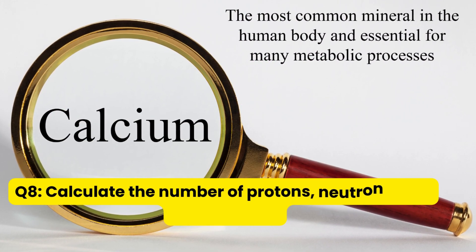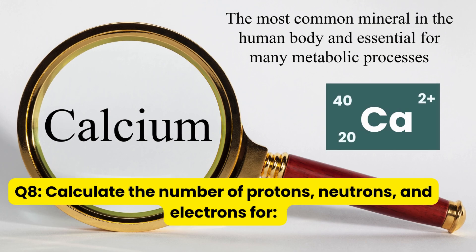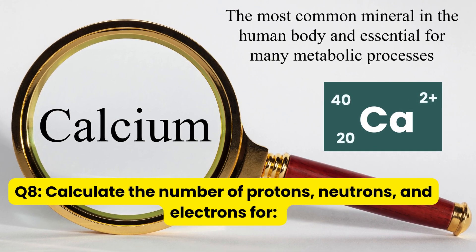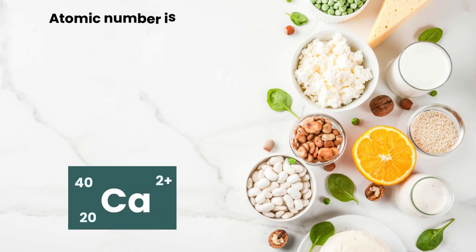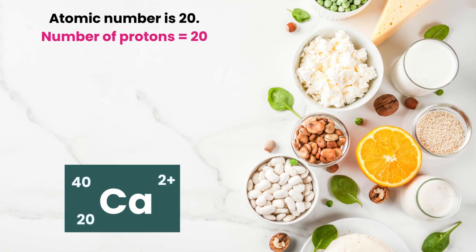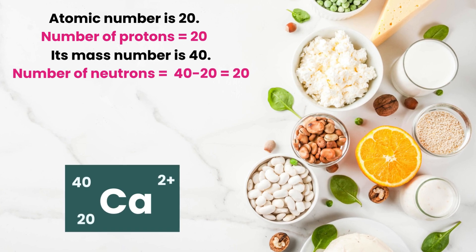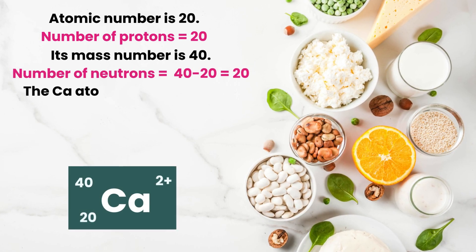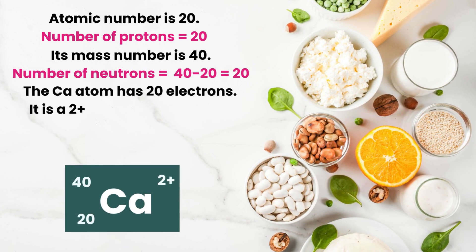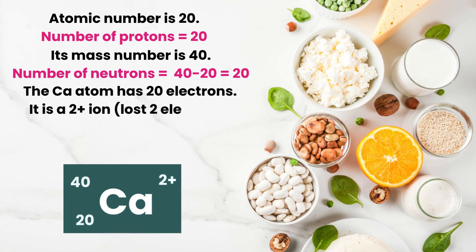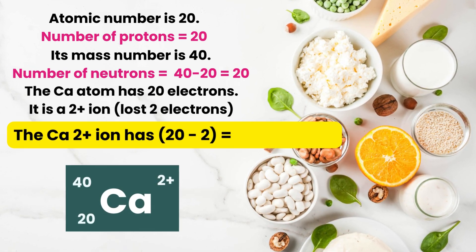Question 8: Calculate the number of protons, neutrons and electrons for calcium with left subscript 20, left superscript 40, and net charge 2+. Atomic number is 20, so number of protons is 20. Mass number is 40, so number of neutrons is 40 minus 20 equals 20. Calcium atoms normally have 20 electrons, but this is a calcium 2+ ion, so two electrons have been lost. Therefore the number of electrons is 18.